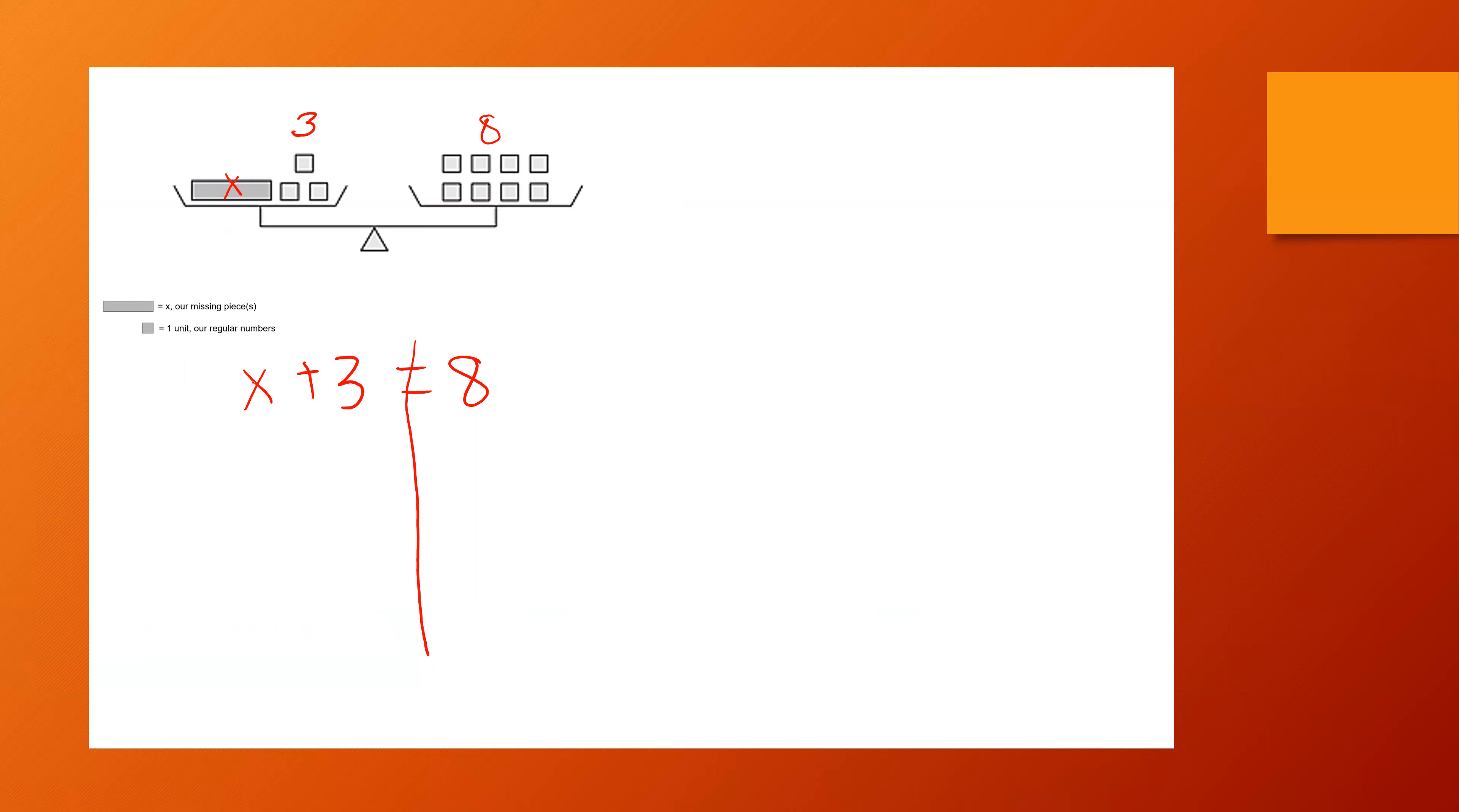How many of these little units do I need to replace that X with, with a number? And that's going to be our answer. So the way we do this is I have X plus three equals eight. I am going to essentially take away off the scale those three little units. But if I do that on one side, I have to do it to the other side. So I'm going to get rid of three on the other side.